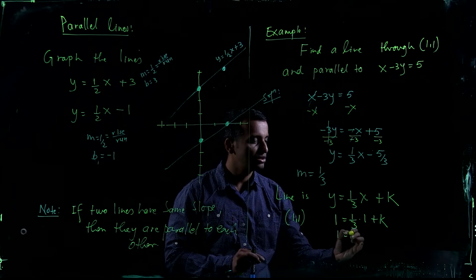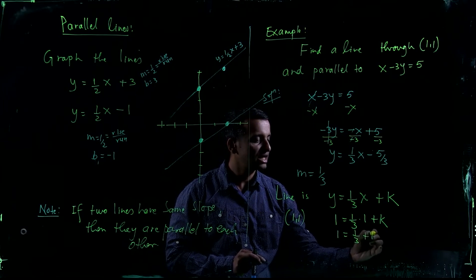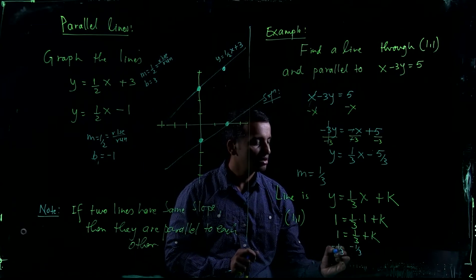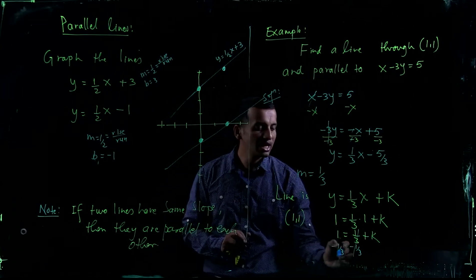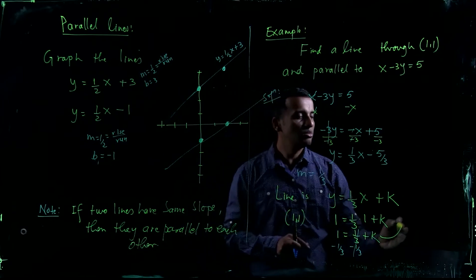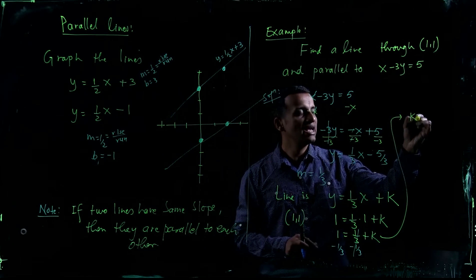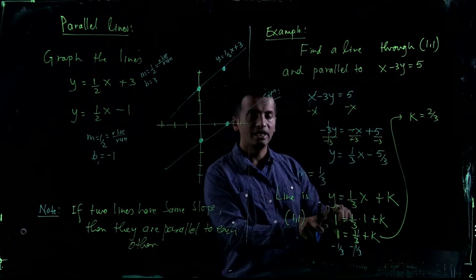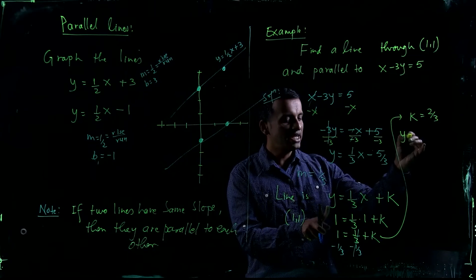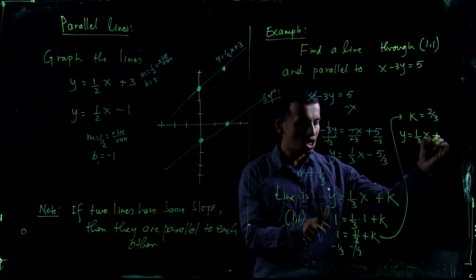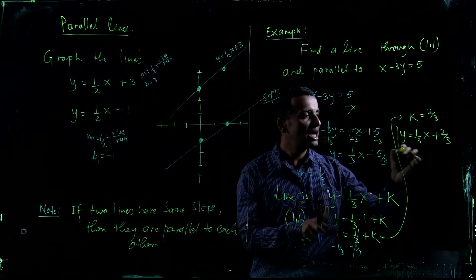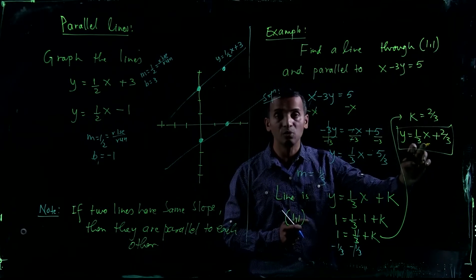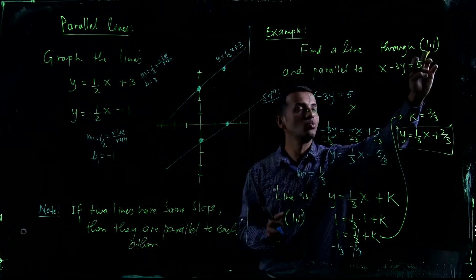Subtract one-third from both sides: 1 minus one-third equals two-thirds. So k equals two-thirds. Plug back in: y equals one-third x plus two-thirds. That is the equation of the line parallel to the given line, with slope one-third, passing through (1, 1).